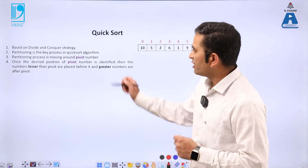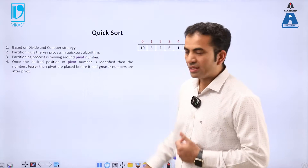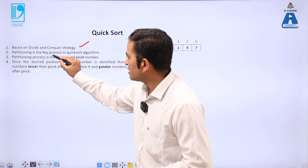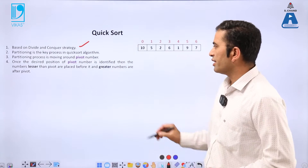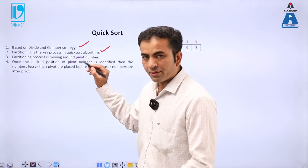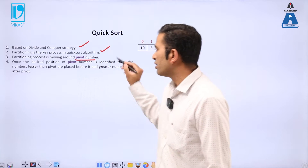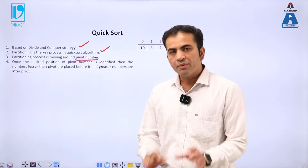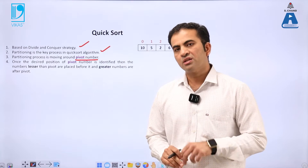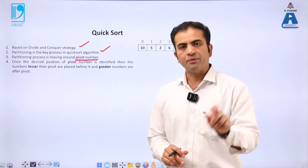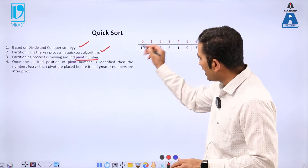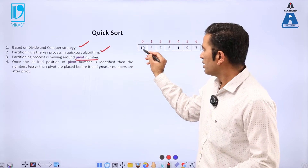Partitioning is the most important process of quick sort — how we are doing the partition. The partitioning process involves moving around the pivot number. The pivot means a central point — the number around which the whole sorting process will revolve. That is called the pivot point.